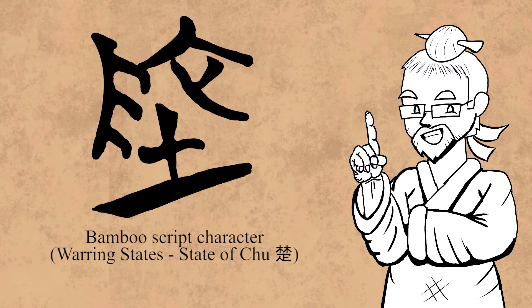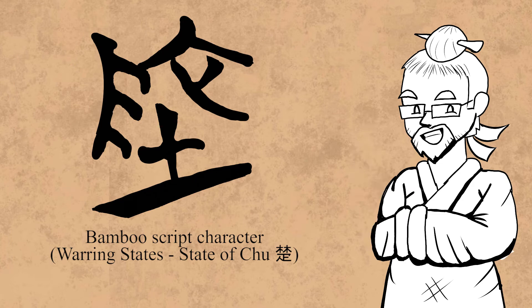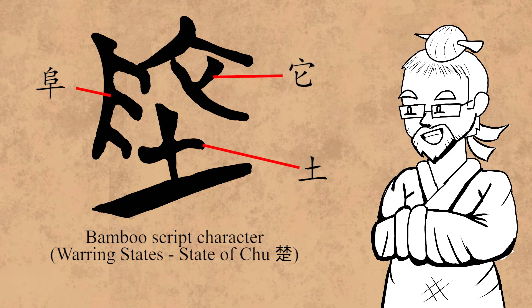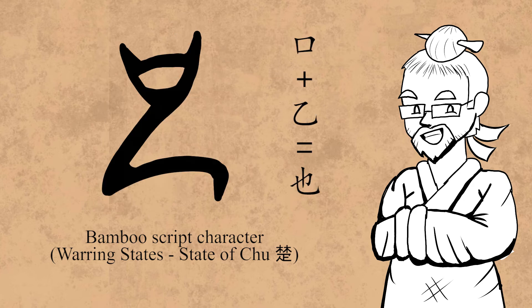However, the most common form that 地 takes during this period is an interesting missing link between the Zhou graph and the modern character. Here, we see the now familiar 阜 mound plus 土 soil, like in the 籀文, but in place of 只, we instead have 它 as phonetic. We can know it's 它 and not 也, because 也 is fairly consistently written as a different glyph in the bamboo slip texts.